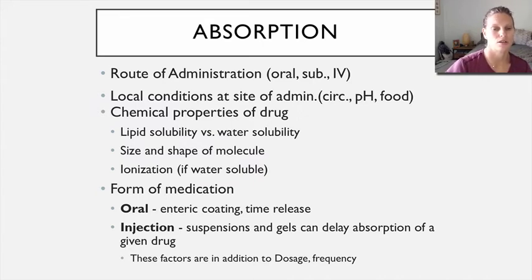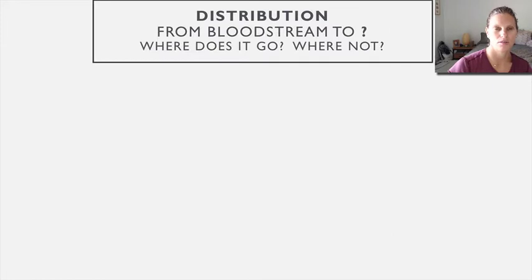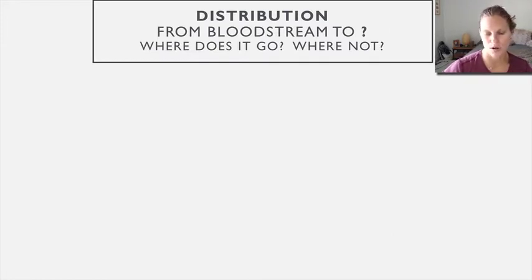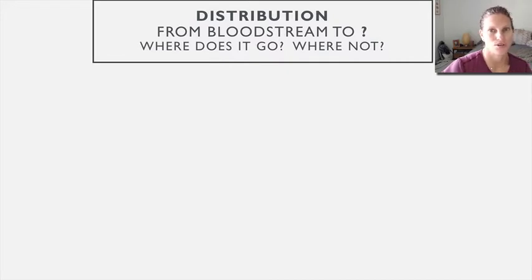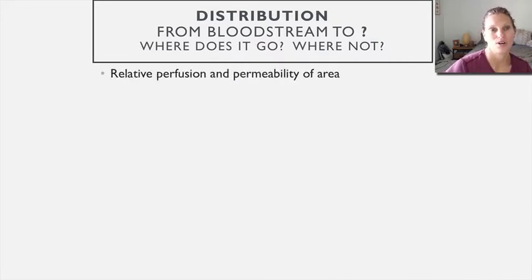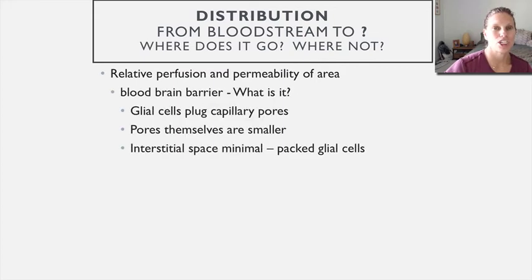All of that is in addition to just how you dose it — the size and the frequency of dosage. Now, once a drug is absorbed into the bloodstream, we need to get it to its target. Where a drug goes in the body is determined by the perfusion and the permeability of the area, because certain areas are harder to get to than others.